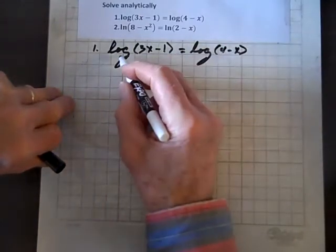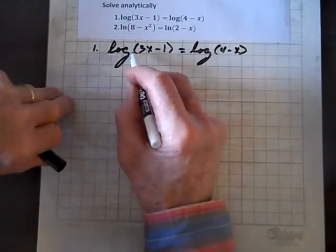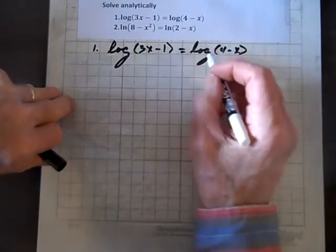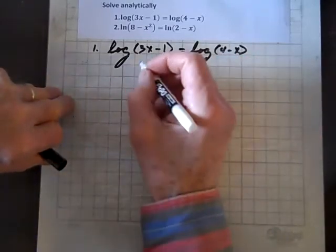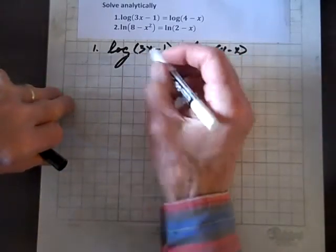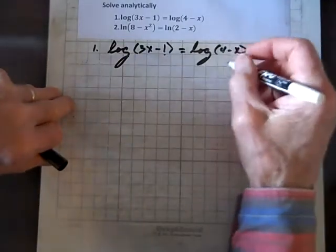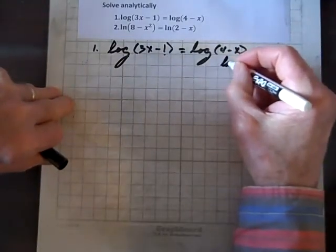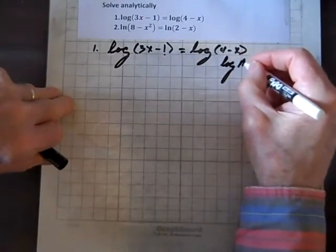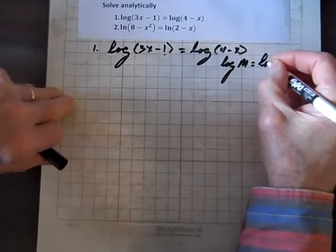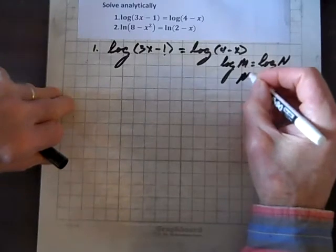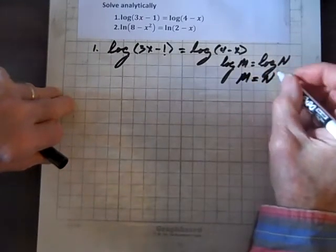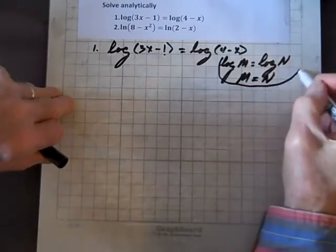Well, anytime you have, as you well know, the log of whatever equals the log of whatever, then you can just equate these two values. Let me go over that rule. If the log of m equals the log of n, then the only way this is possible is if m equals n. So there's the rule.